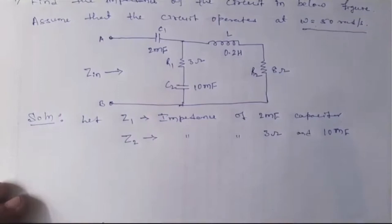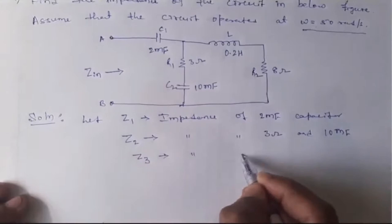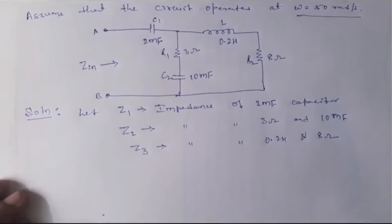And let Z3 be the impedance of a 2 henry inductor and an 8 ohm resistor.